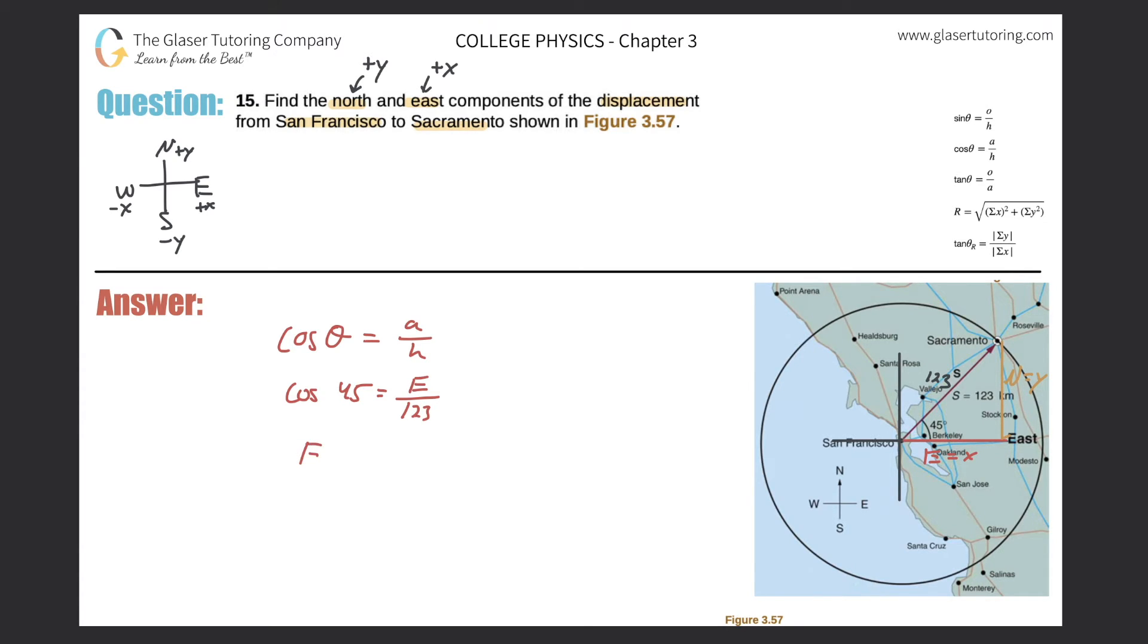So the east component here will be equal to - just take out the calculator, do cosine of 45 times 123. And it'd be 87.0 if I were to round. 87.0, what is this, in kilometers, so km. Okay, wonderful.